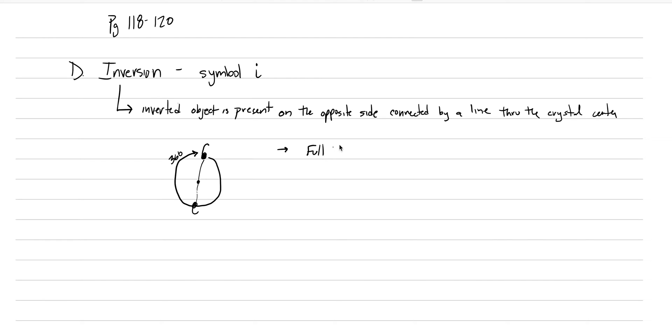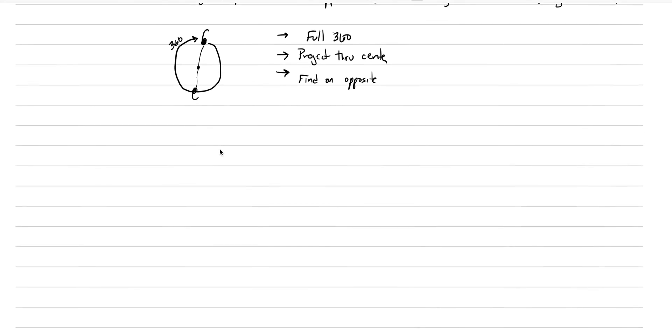We take a full 360. That was step one. Then step two, we project through the center. And then we find it on the opposite side. This is a very common symmetry element to see or to find in minerals.